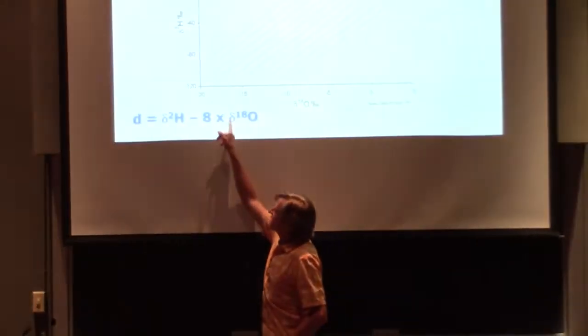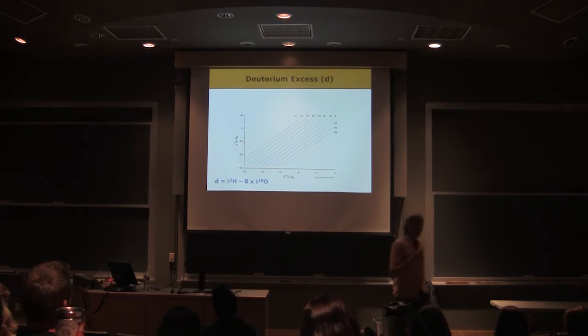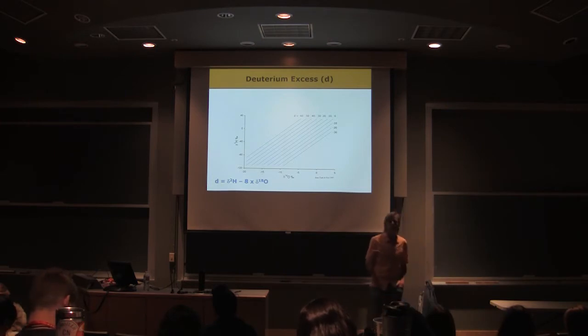So equilibrium fractionation is going to move us up and down a line with about a slope of 8. And so by calculating deuterium excess, we're basically subtracting out any influence of equilibrium fractionation on our sample.